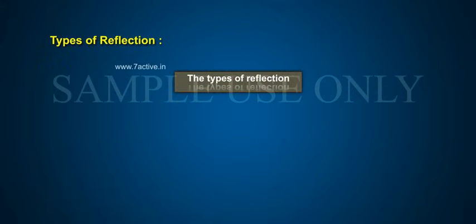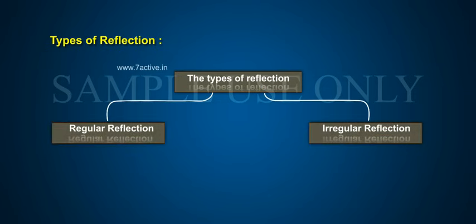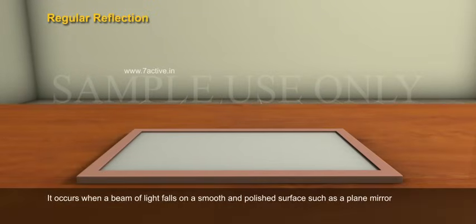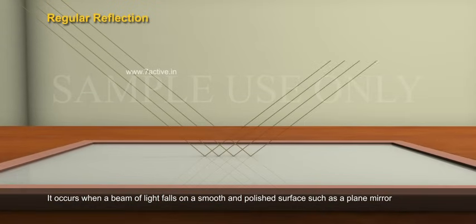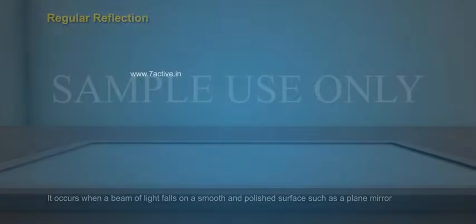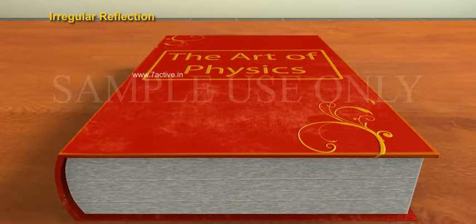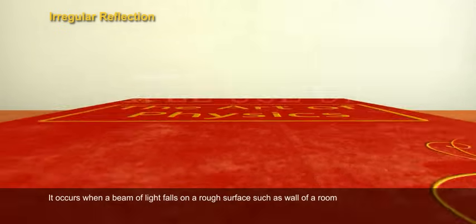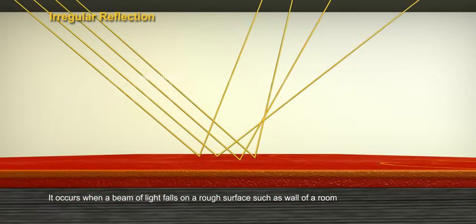Types of Reflection: The types of reflection are regular reflection and irregular or diffused reflection. Regular Reflection occurs when a beam of light falls on a smooth and polished surface, such as a plain mirror. Irregular Reflection occurs when a beam of light falls on a rough surface, such as wall of a room.